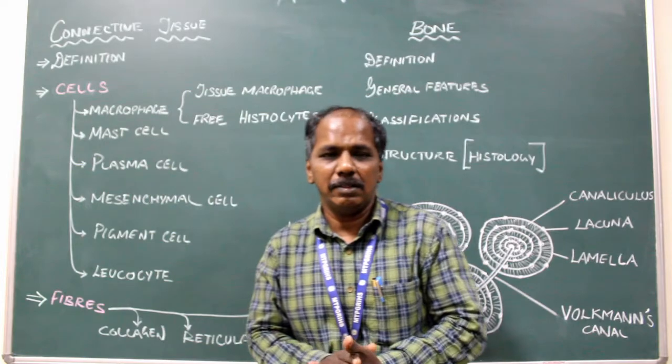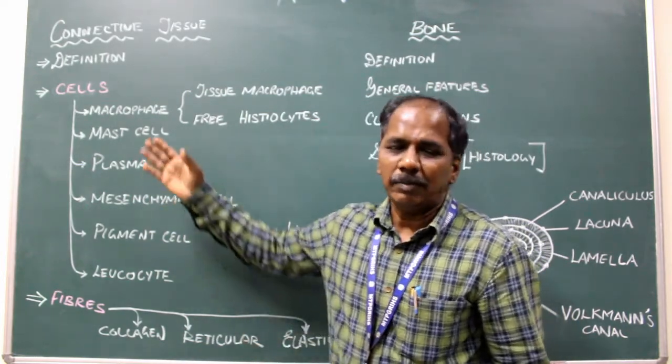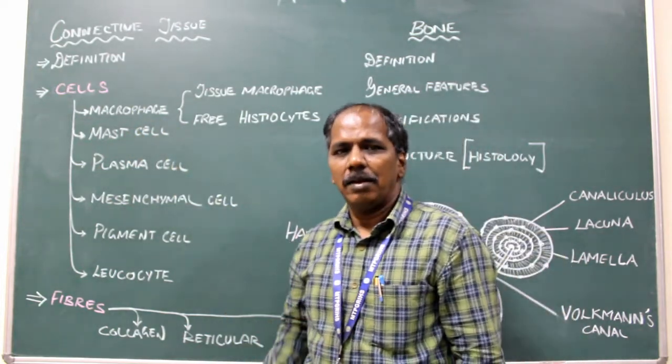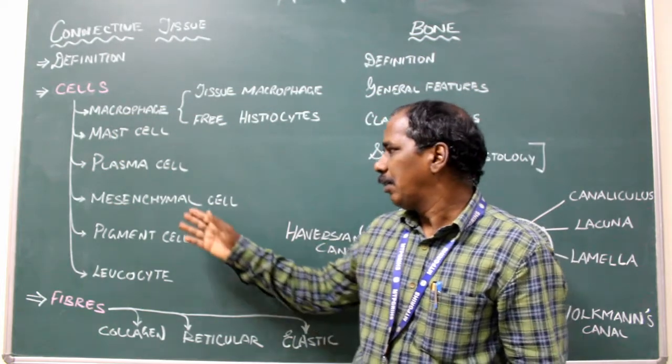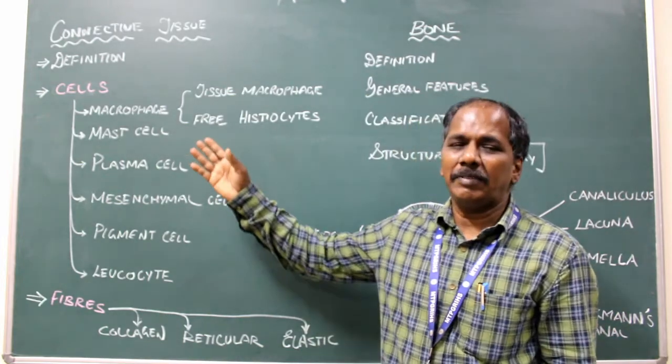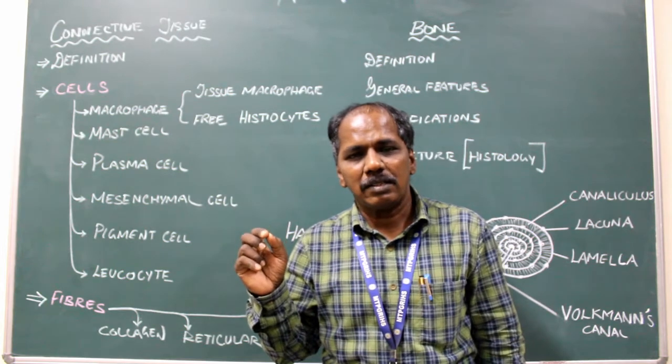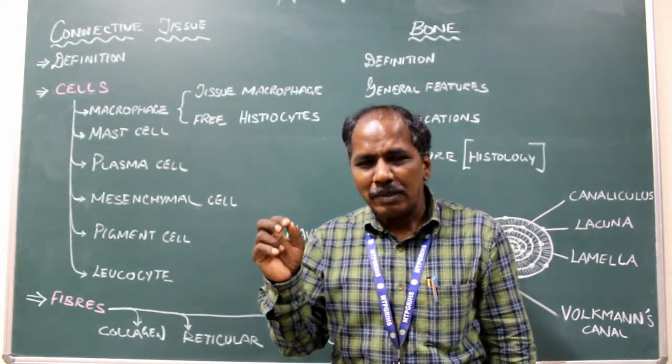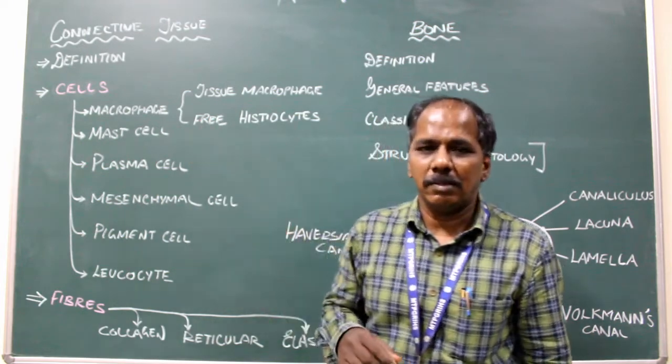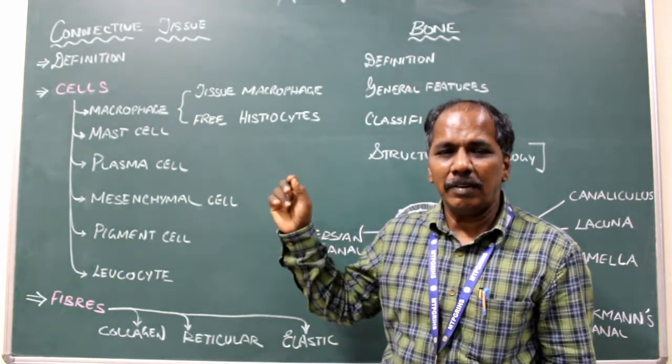Cells of connective tissue: The cells of connective tissue are macrophage, mast cell, plasma cell, pigment cell, mesenchymal cell, and leukocyte. What is macrophage? It is a large cell which has the property of phagocytosis. It is of two types: tissue macrophage and free macrophage or free histiocytes.